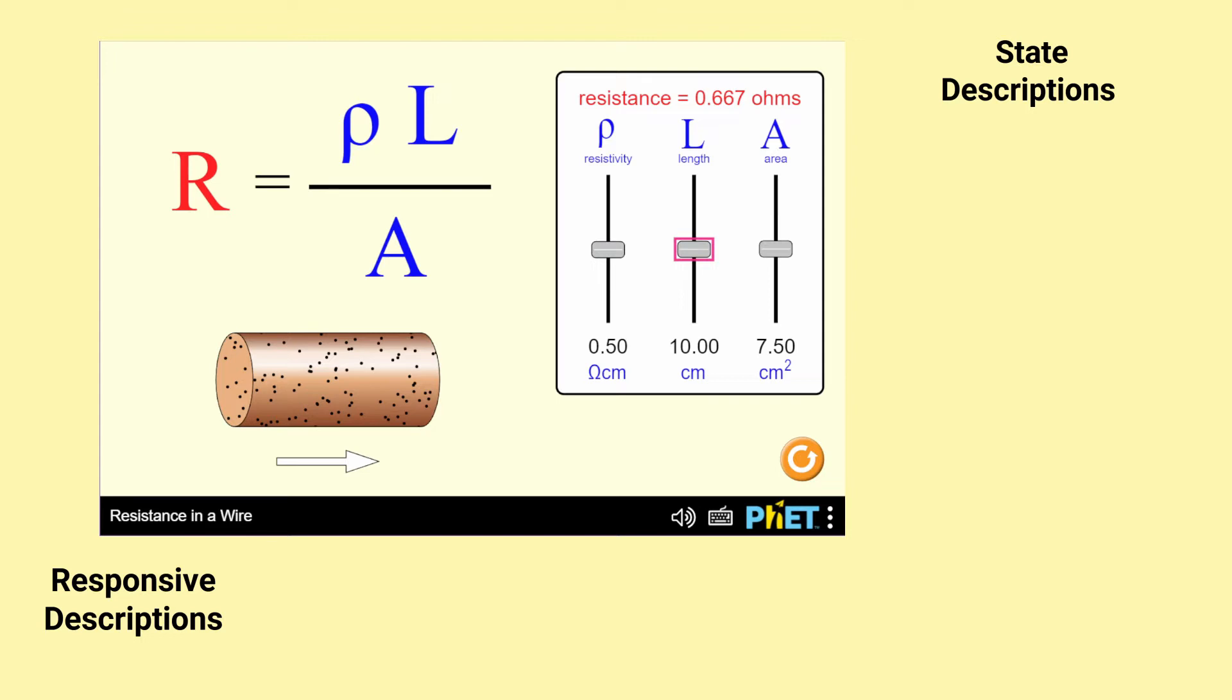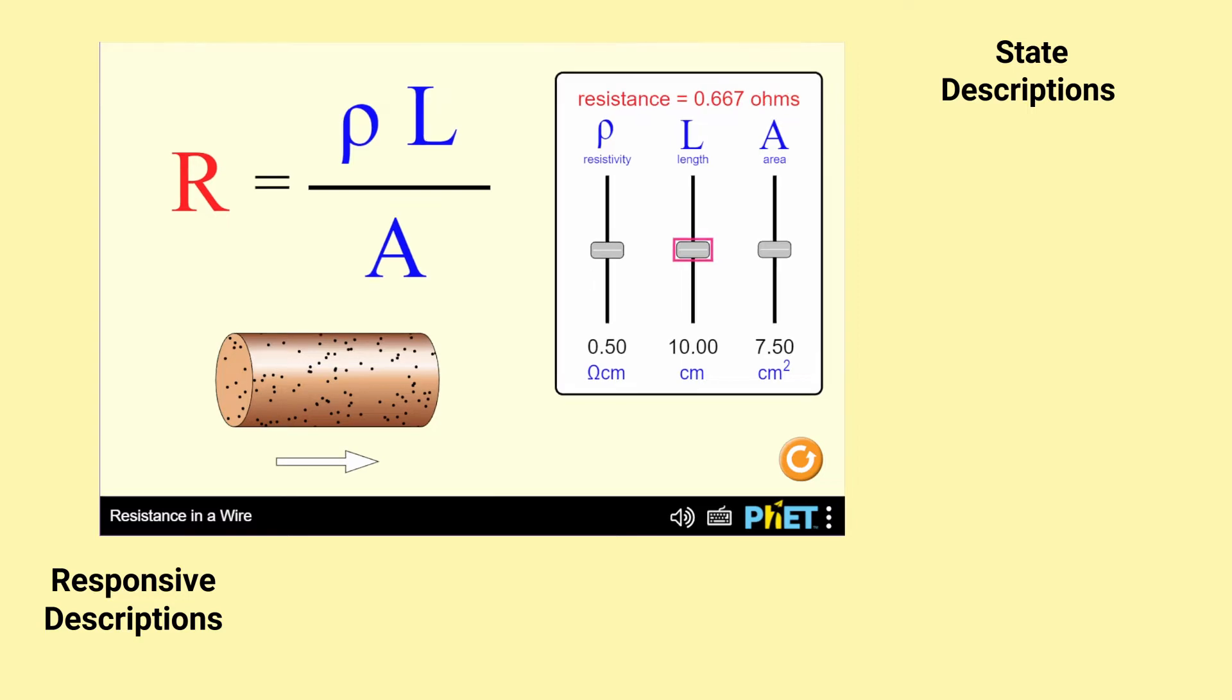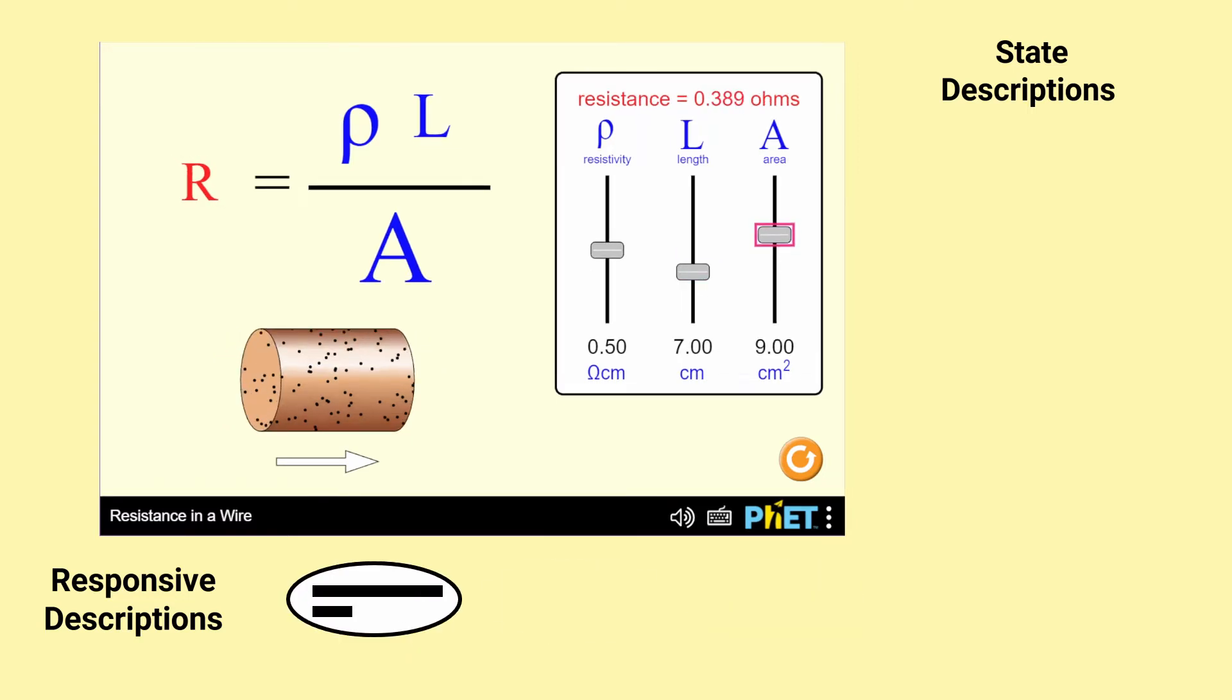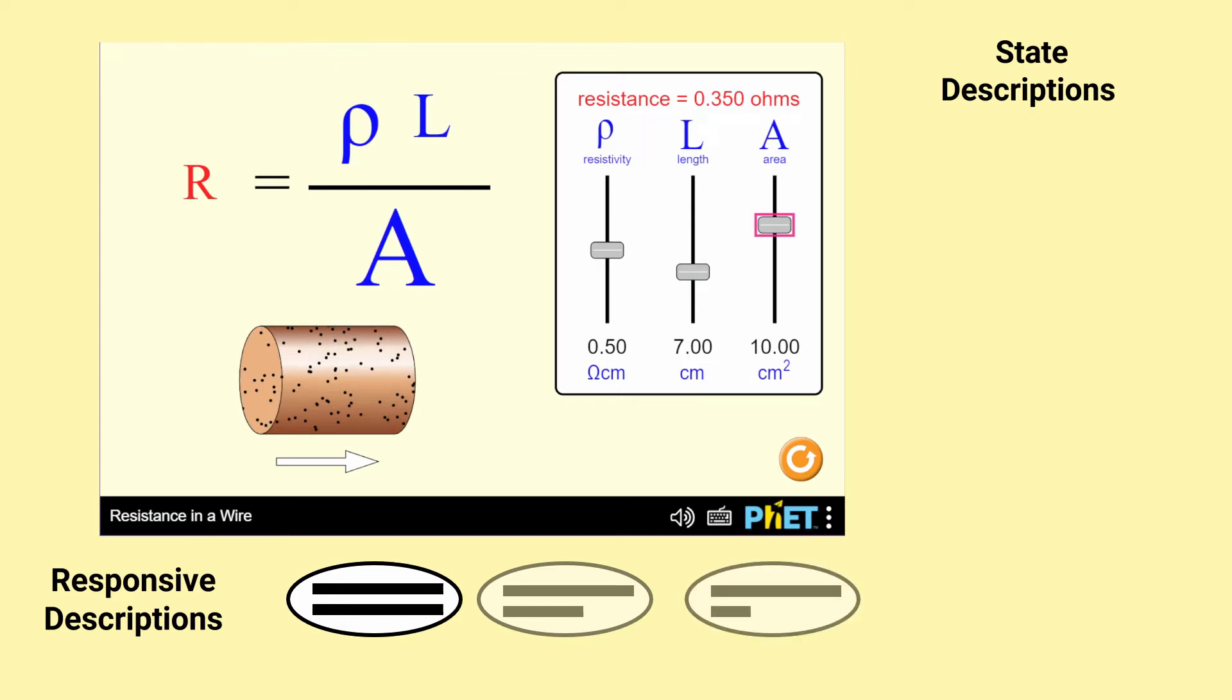Responsive Descriptions are read out in direct response to a learner's interactions. They are delivered automatically when the learner navigates to or interacts with interactive objects in the simulation, like buttons, checkboxes, sliders, draggable objects, and so on. Responsive Descriptions provide relevant changes to objects and any other part of the simulation that is helpful for the learner to know.